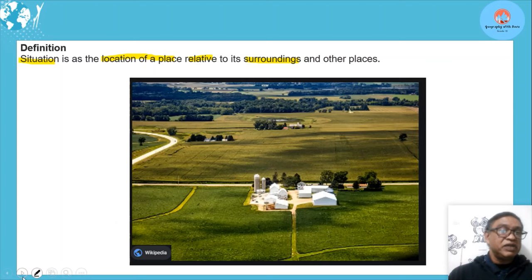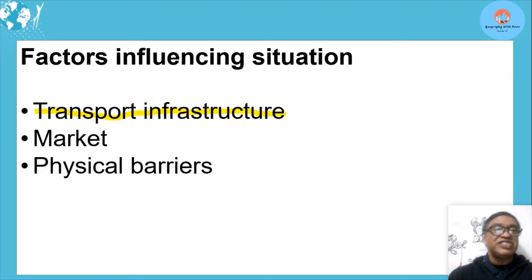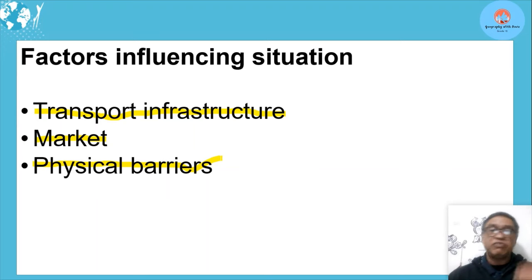Situation factors include transport infrastructure leading out — roads, railways — and availability of markets. Even physical barriers like mountains around the farm can be situation factors, protecting the farmer from strong winds and weather conditions even if they're not on the site itself.